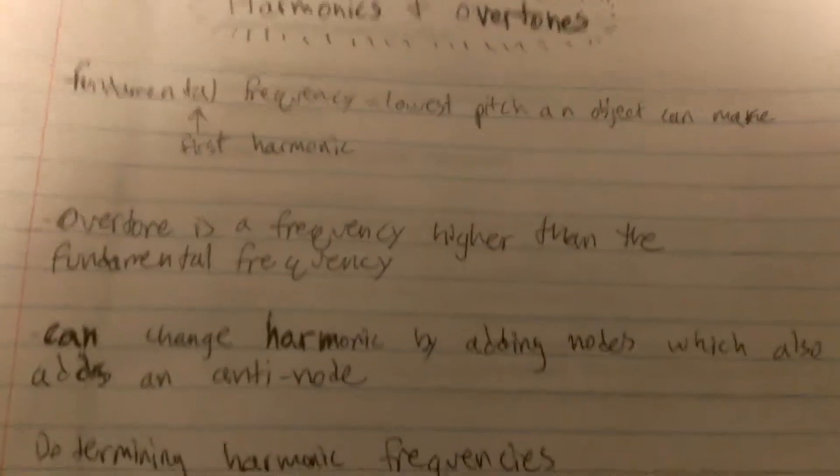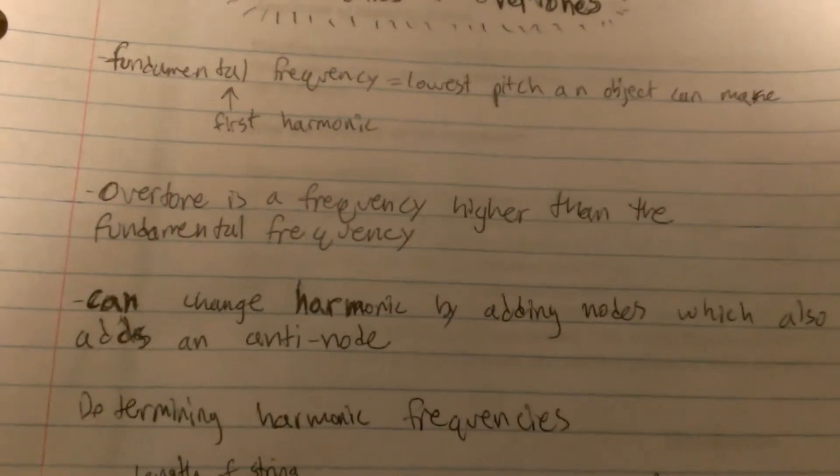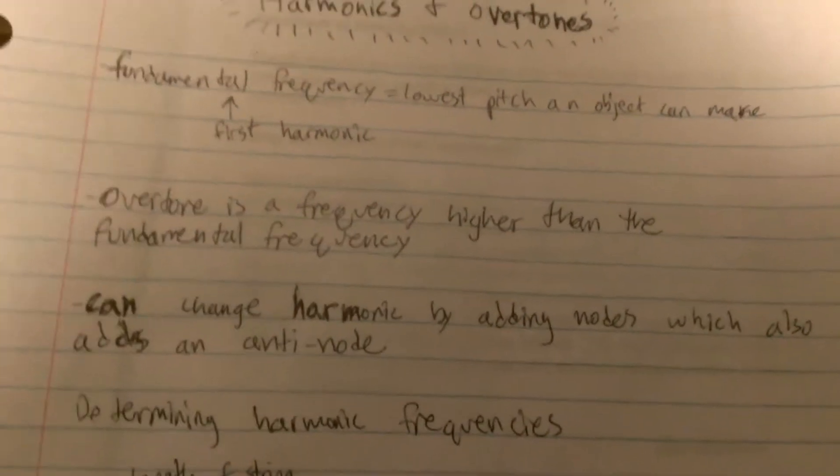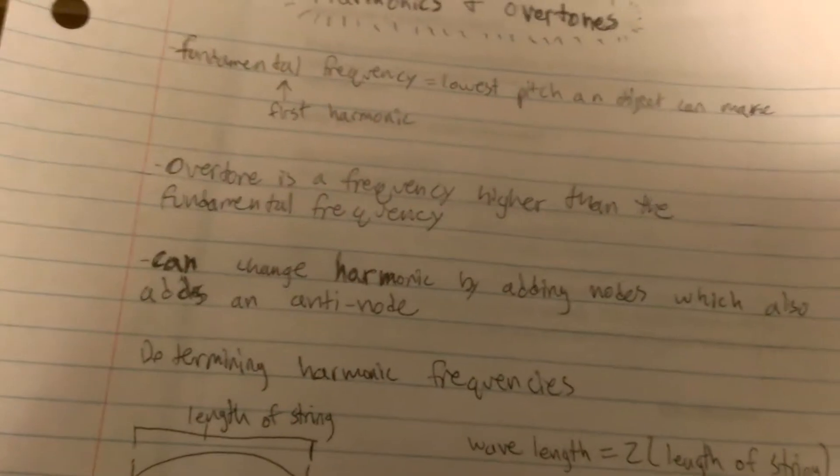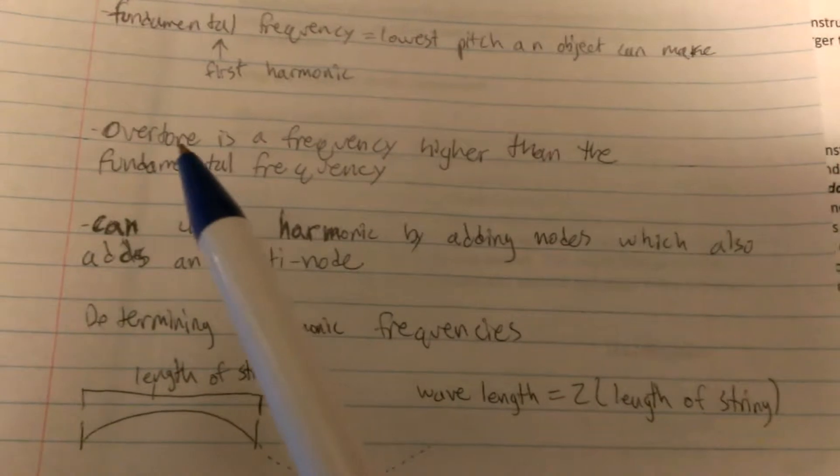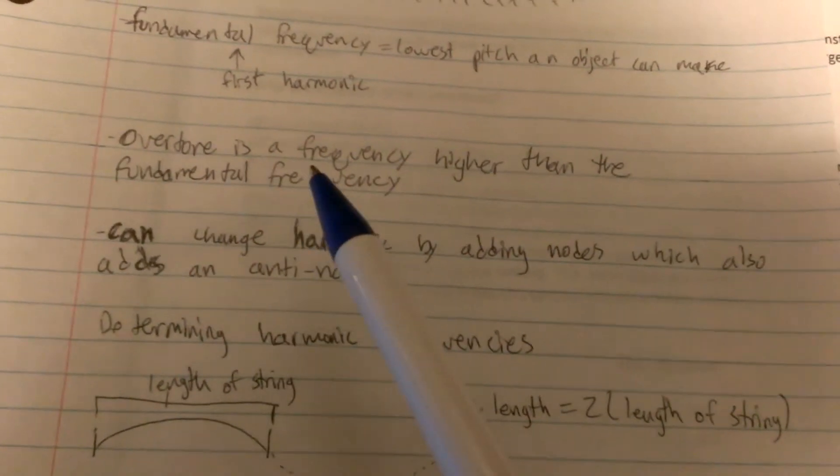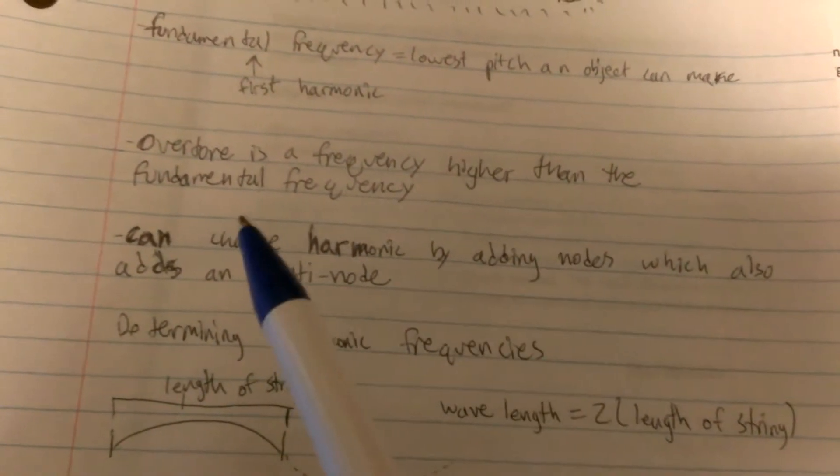The first frequency that you should know about is the fundamental frequency, which is the lowest pitch an object can make. It is also called the first harmonic. Now, there are lots of other harmonics, like overtones, which is any frequency higher than the fundamental frequency.